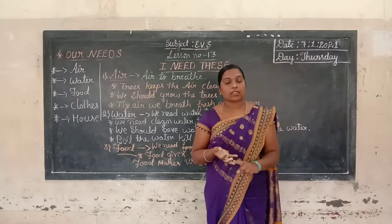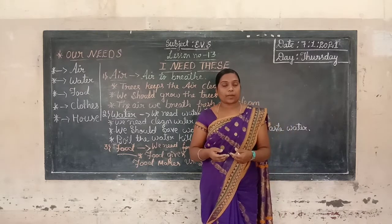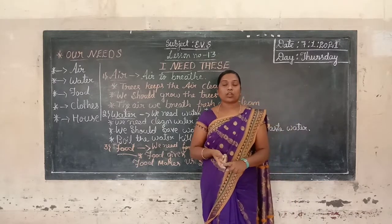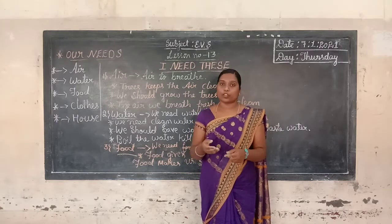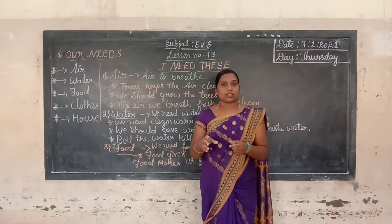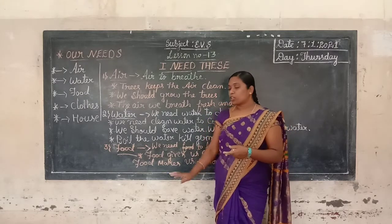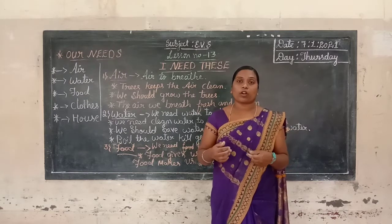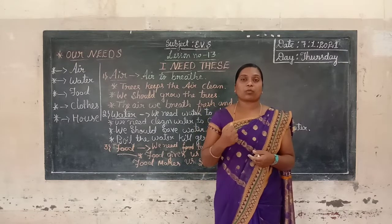Most food items come from plants. From plants we get cereals like paddy and dal, pulses like green gram and bengal gram, and many vegetables like onion, tomato, potato, chili. We also get greens like spinach and coriander leaves, which we use to prepare delicious food.